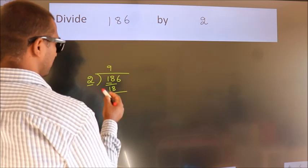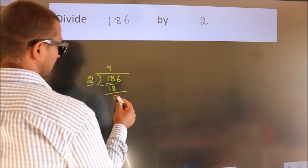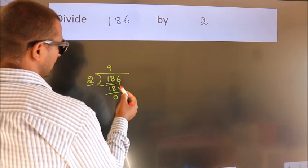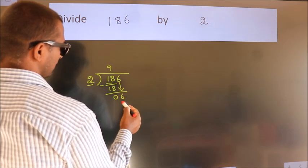Now we should subtract. We get 0. After this, bring down the beside number. So 6 down.